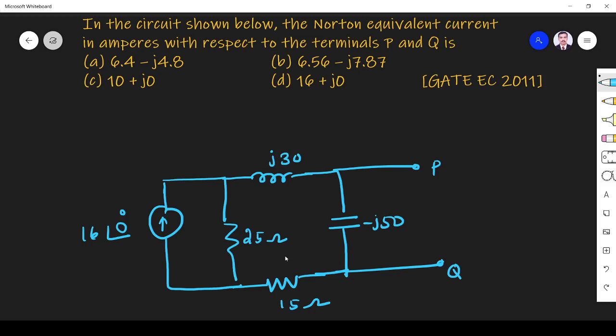The question is, in the circuit shown below, the Norton equivalent current in amperes with respect to the terminals P and Q. What they are asking is Norton equivalent current.